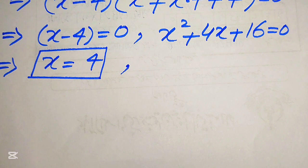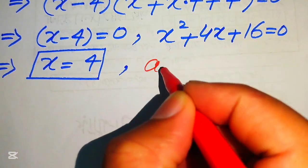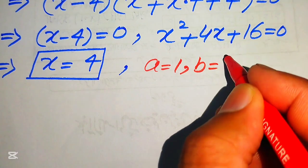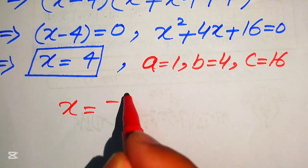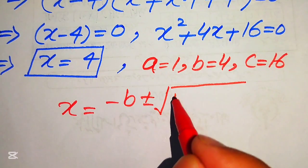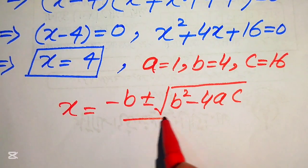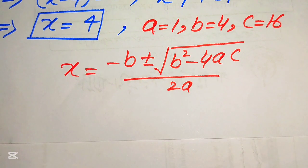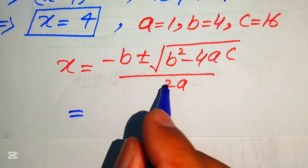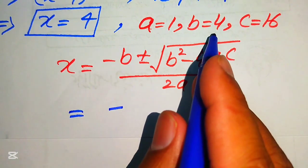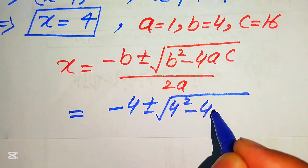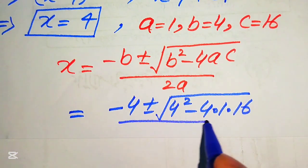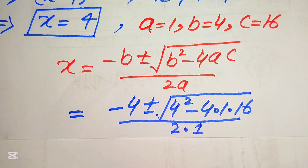To solve this quadratic equation we apply the quadratic formula. We write the coefficients: a equals 1, b equals 4, and c equals 16. The quadratic formula is x equals minus b plus or minus the square root of b squared minus 4ac, divided by 2a. Now we substitute the values of a, b, and c in this formula: it becomes minus 4 plus or minus the square root of 4 squared minus 4 times 1 times 16, divided by 2 times 1, where a equals 1.